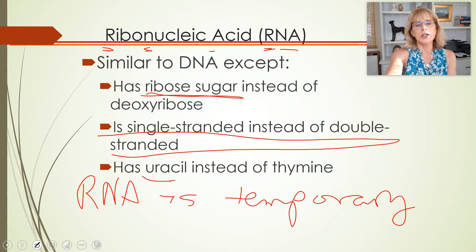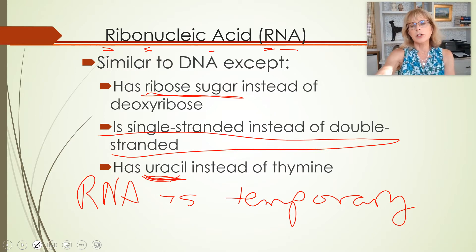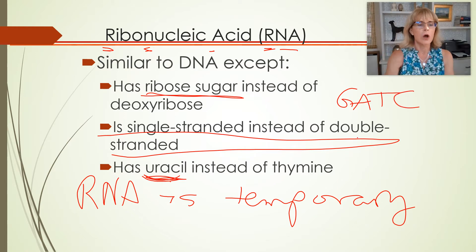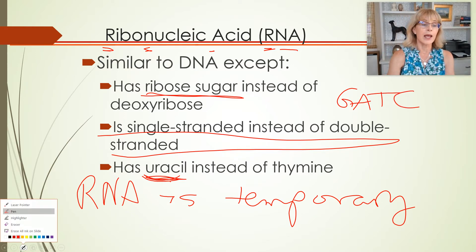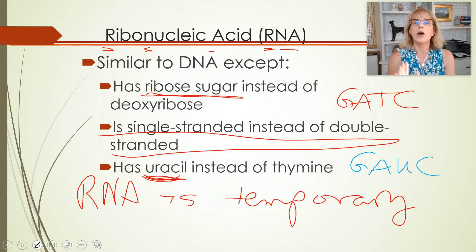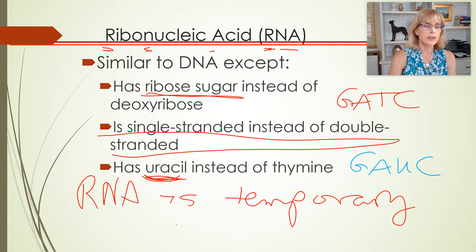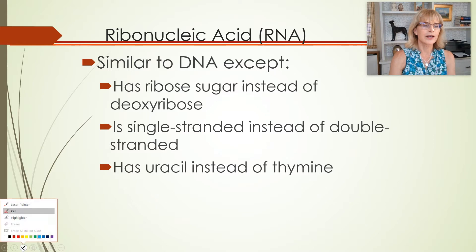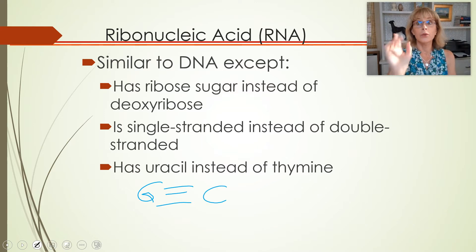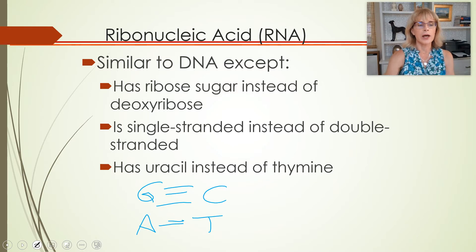RNA has got four nitrogenous bases. Except where DNA has G, A, T, and C, RNA has got G, A, U, and C. Now the binding rules of complementarity are still basically the same. The binding rules for DNA are going to be G with C with three hydrogen bonds, and A with T with two hydrogen bonds.